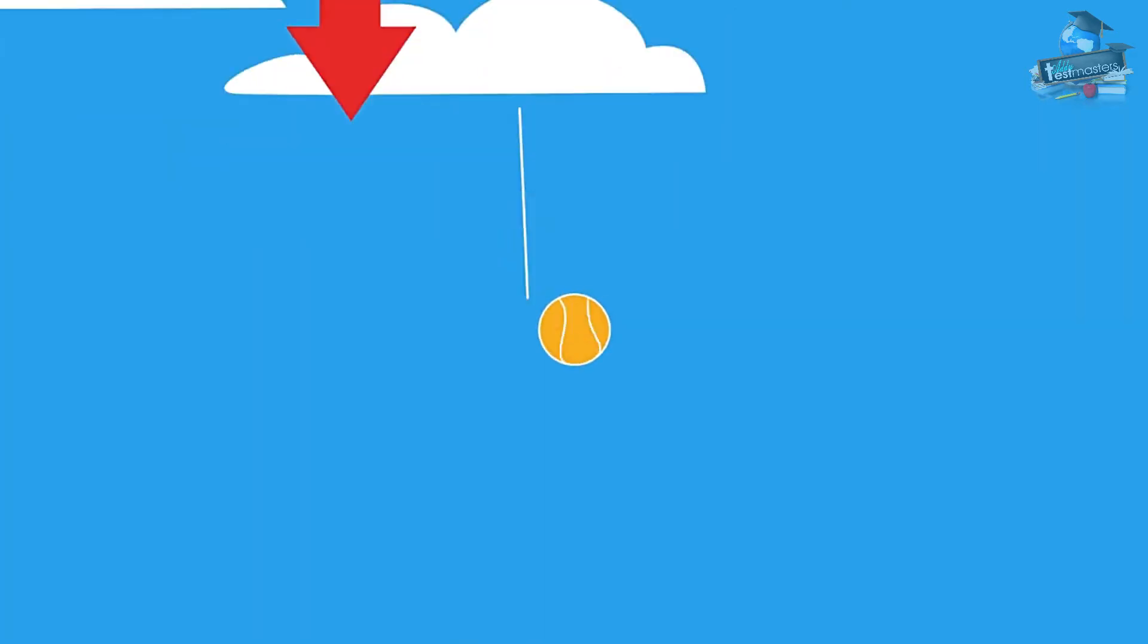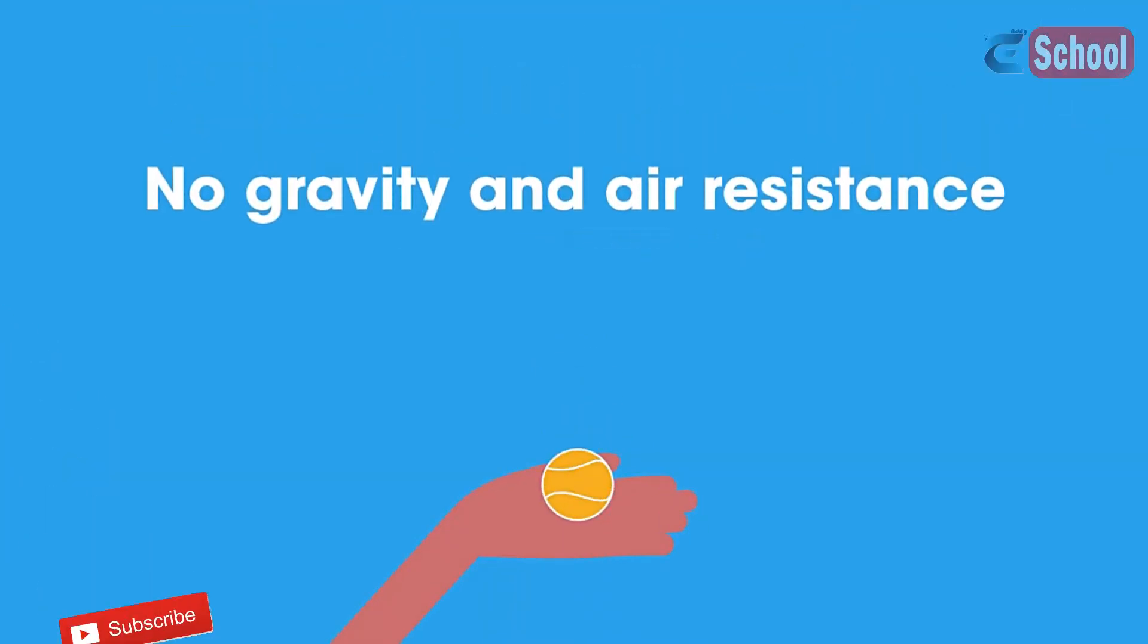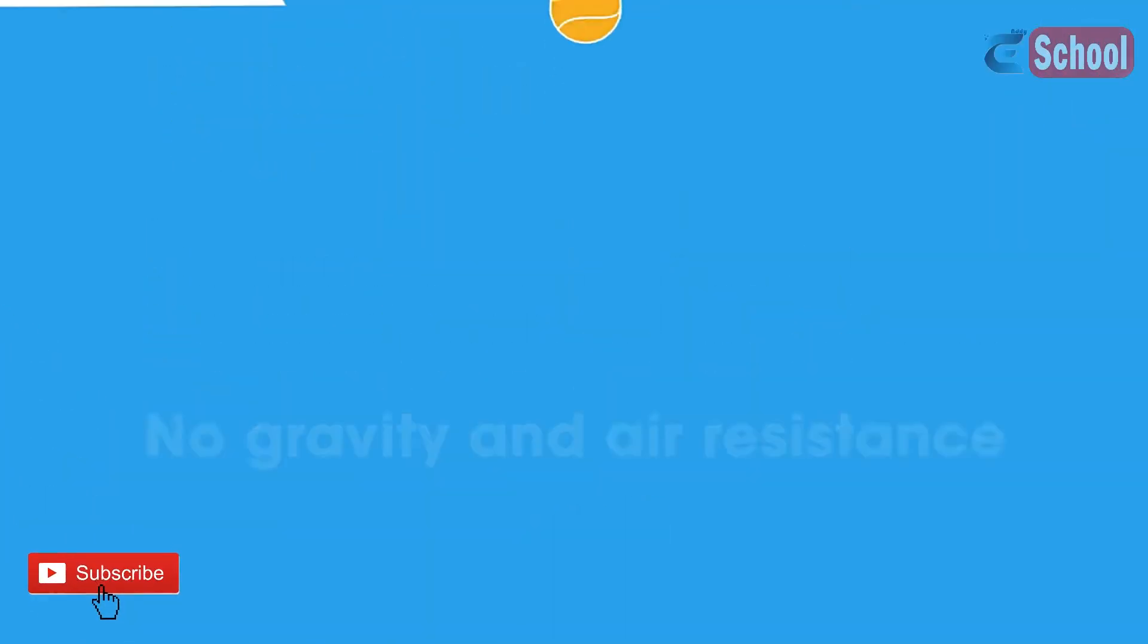Down, making it fall faster and faster. Without gravity and air resistance, the ball would just go on traveling in the direction of your throw.